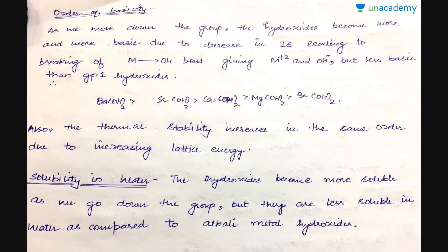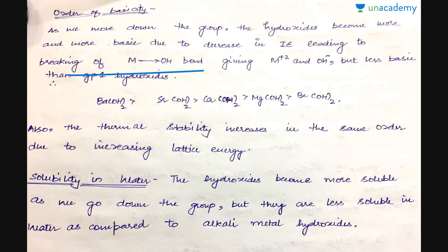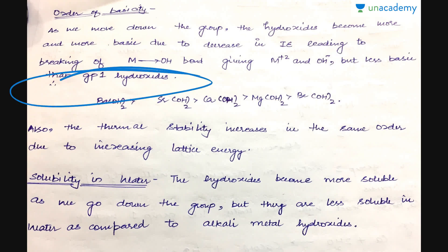Next is the order of basicity. As we move down the group, the hydroxides become more and more basic, due to the decrease in ionization energy which leads to the breaking of the M–O bond, making the release of the OH⁻ ion comparatively easier. As we move down the group from beryllium hydroxide to strontium hydroxide, the basic nature increases. However, these are less basic than group 1 hydroxides because their sizes are smaller than the corresponding alkali metals, making their M–O bond dissociation energies comparatively higher.